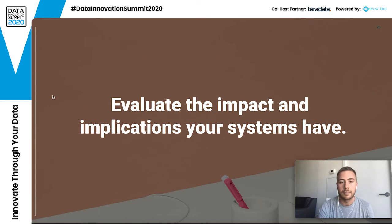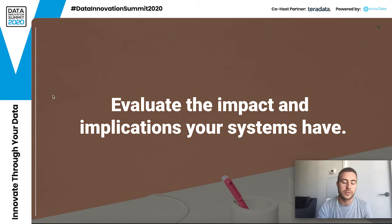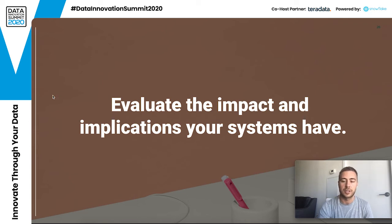You should evaluate the impact and implications your systems have. A lot of people really like the idea of flashy machine learning models with recommendations based on age and gender, but there are many implications. They might not actually operate better — they might discriminate, and there are so many unknowns. To be really thorough, you have to do this analysis so you can be confident in whatever your organization is putting out.